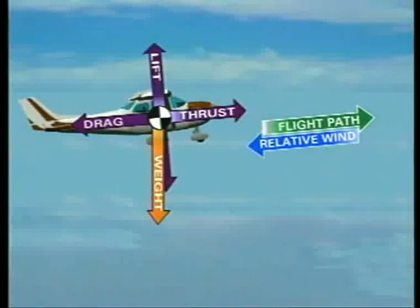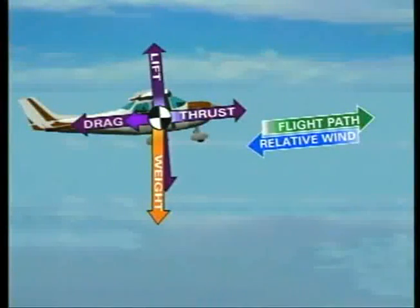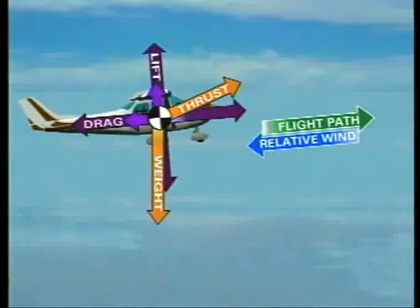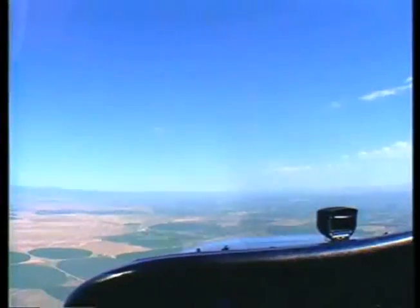One component of weight opposes lift, 90 degrees to the flight path, and another component acts in the same direction as drag, opposing thrust. Thrust also is divided into separate components: one which acts parallel to the flight path, and the other perpendicular to the flight path. The total thrust required is greater in a climb than in straight and level flight. Unless thrust is increased through an addition of power, airspeed will decrease as the pitch attitude increases.